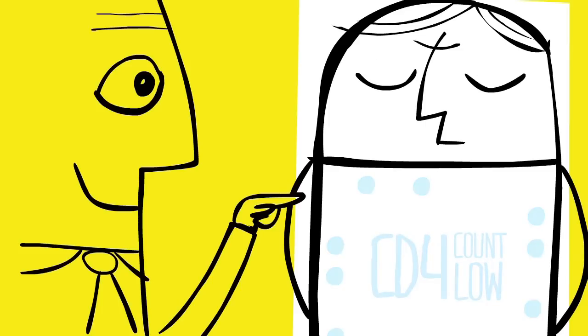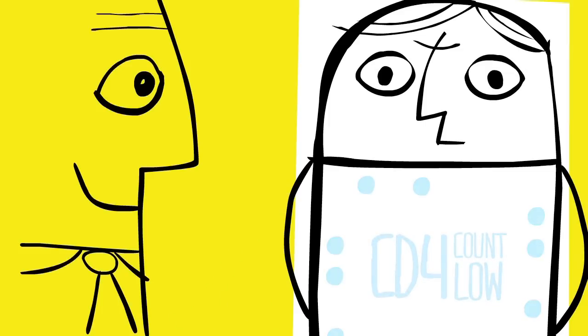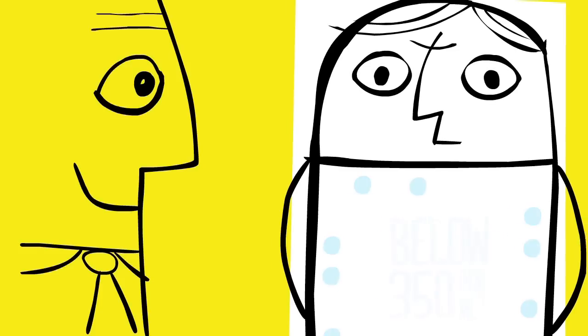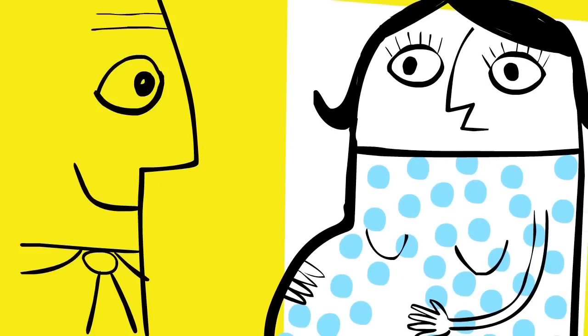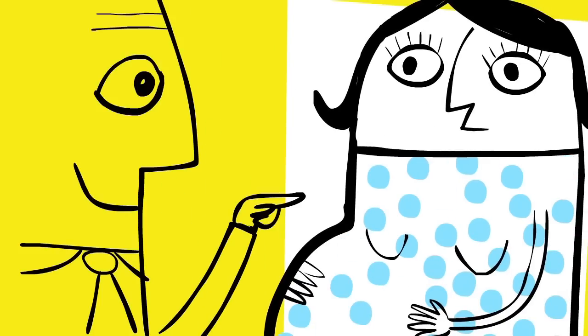People generally start treatment when their CD4 count is low. This is the number of CD4 cells per cubic milliliter of blood, which in the UK means below 350. Sometimes doctors may start treatment before if there is additional risk, such as during pregnancy.